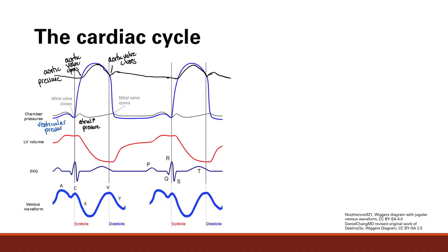The cardiac cycle is another way to look at how the heart beats. It's very similar to the pressure-volume loop, just a different way. The blue line here is ventricular pressure, the gray line is atrial pressure, and the black line is the aortic pressure.